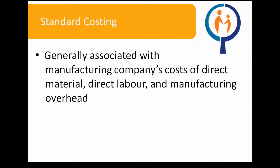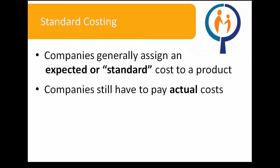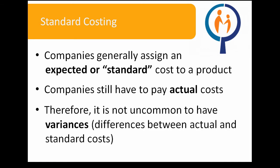The concept of standard costing is generally associated with manufacturing companies and their direct materials, direct labor, and manufacturing overhead costs. Manufacturing companies generally assign an expected or standard direct material, direct labor, and manufacturing overhead cost to a product. However, companies still have to pay the actual costs. For example, if it takes more inspection time than expected to complete a handbag, the company still has to pay the worker for the extra time. As such, it is not uncommon to have variances, otherwise known as differences between actual and standard costs.